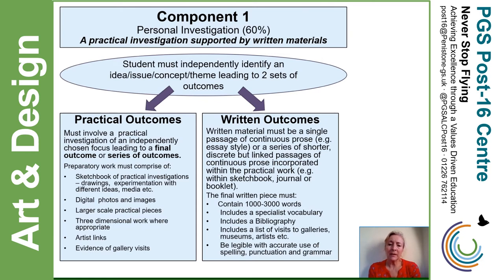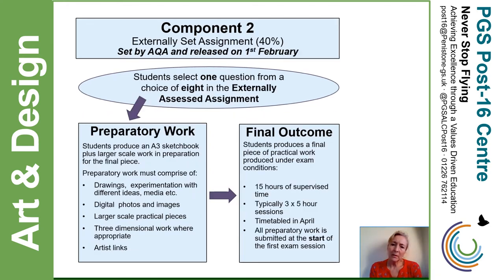If students are good with the essay style they can take that approach. If they want to present the work in a more creative manner, as long as the assessment objectives are covered, it contains the required number of words, and looks in depth at the work of other artists, that is absolutely fine. Component two is an externally set assignment worth 40% of the final grade. It's presented as an exam paper from the exam board and students choose one of the questions from it. Generally the questions are very broad, so it's very important that up to that point we are developing each student so they can work quite independently. It is assessed with the same assessment objectives used throughout the course and at GCSE.